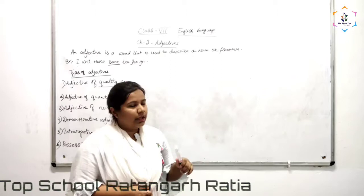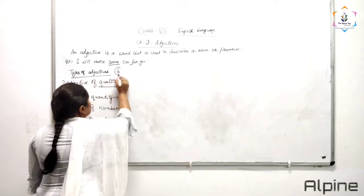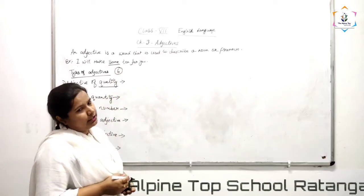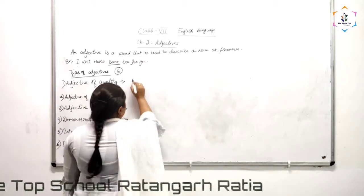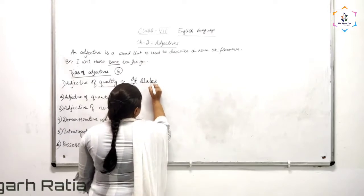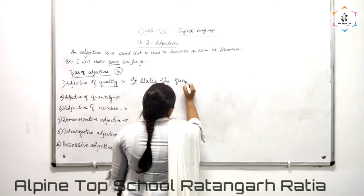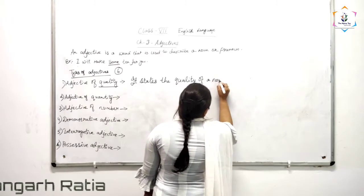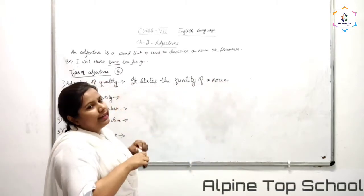There are six types of adjectives. First one is adjective of quality. The name quality itself suggests that it states the quality of a noun.